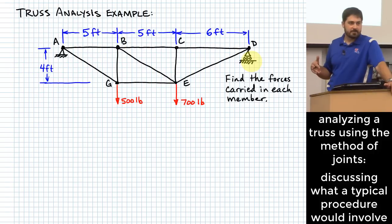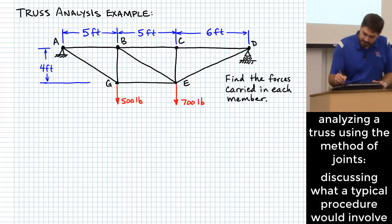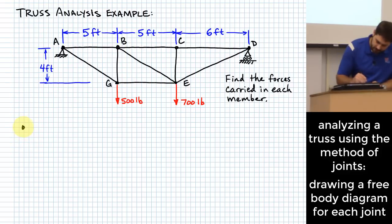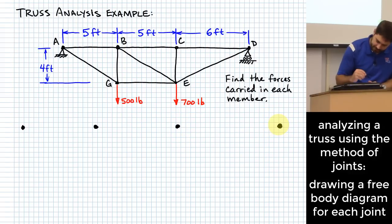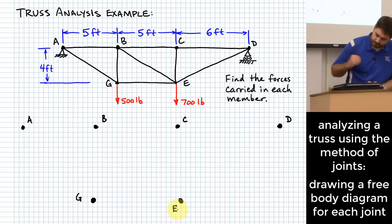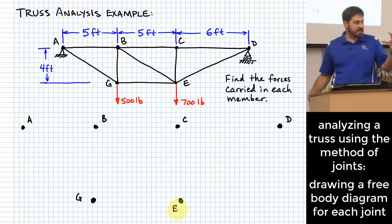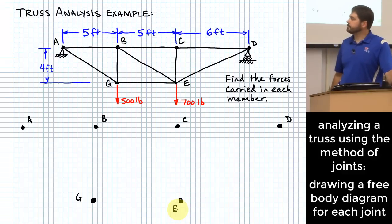The method of joints involves drawing free body diagrams — not surprisingly — of joints. We're going to pretend like we break the pins out and just look at the forces acting on the pins, and we're going to do that for all the pins. Let's lay them all out: pin A, pin B, pin C, pin D, pin G, and pin E. Let's draw all of our free body diagrams right now so we'll see how each one interacts with the others. Someone wants to start with A — sounds good.